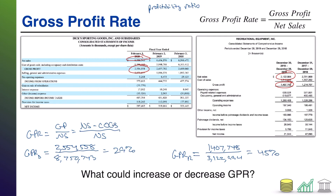There's an argument to be made: Dick's doesn't keep as much of the profit — they don't mark it up as much — but their sales are much higher. REI keeps more of the profit, but their sales are lower. This really just comes down to company decision; it could be that Dick's is more widespread, has more stores. There's a lot more that goes into it. But on the whole, what this ratio is simply telling you is that relatively speaking, REI marks up their goods more and keeps more profit from those goods.